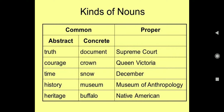Now, talking about proper noun — Supreme Court: particular place ko indicate kiya hai. Queen Victoria: ek particular person ko indicate kiya hai. December: ek particular month ko. Museum of Anthropology, Native American — so particular, specifically name diye hain, so yeh proper noun kahlaayenge.